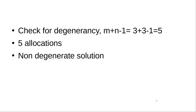The first step is to check for degeneracy. Is there any degeneracy in the problem? We calculate m plus n minus one, where m is the number of rows and n is the number of columns. So three plus three minus one makes five. Now, are the number of allocations equal to m plus n minus one? Yes, in this case we have five allocations, so it is a non-degenerate solution.